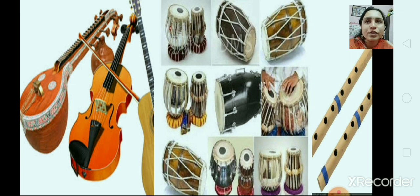So children, different sounds are produced because of the vibrations in the length and thickness and the tightness of the string. And these are the stringed instruments. This veena, violin and guitar, these are the stringed instruments.